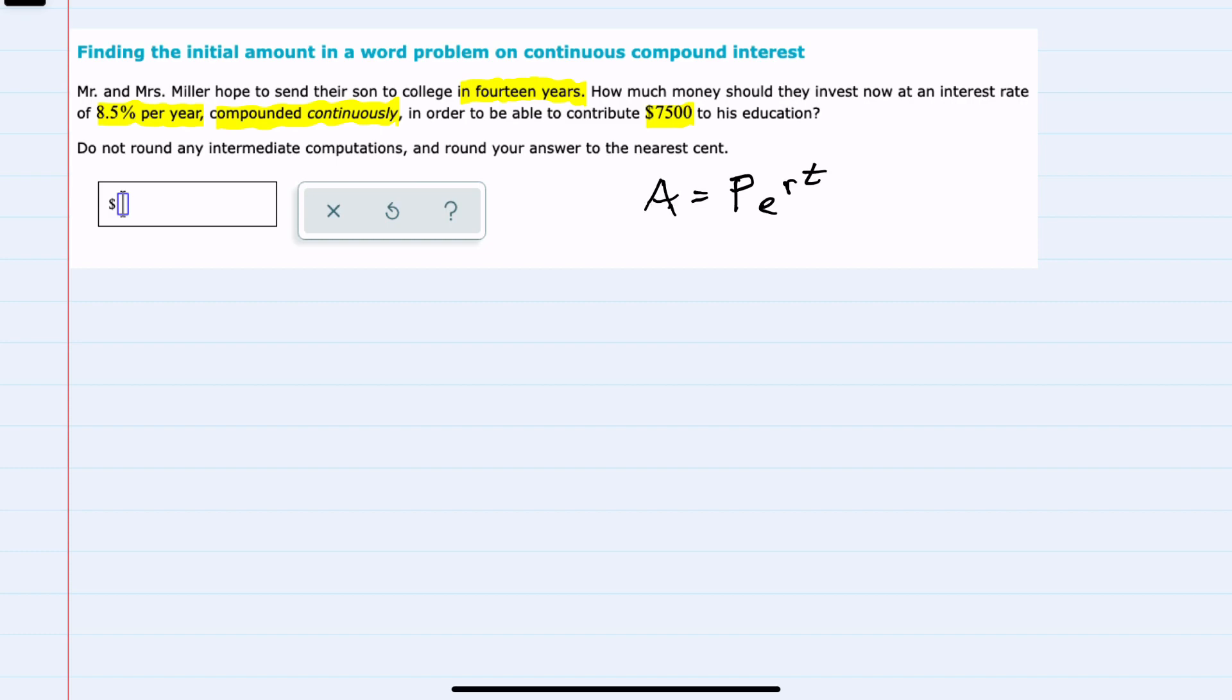Since we are told that the compounding is continuous, we know that our formula will be A equals P, E to the RT.